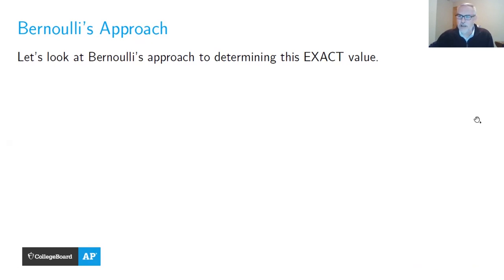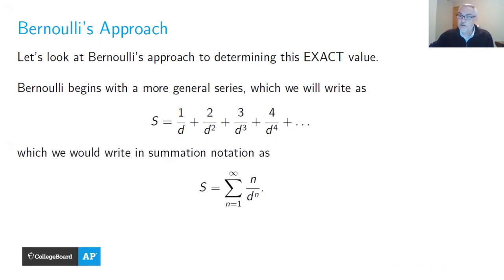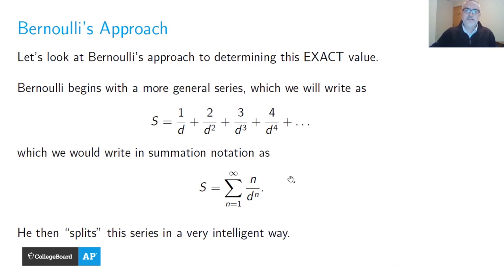I'd like to take a few minutes to show you Bernoulli's approach to finding this exact value. It's instructive to see this historical perspective. Bernoulli begins with a more general series, which I'll write as capital S: 1/d + 2/d² + 3/d³ + 4/d⁴ + ⋯, or in summation notation, Σ n/d^n from n=1 to infinity. For Bernoulli, d will equal 2 in a moment.